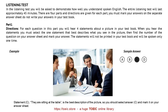Part 1. Directions: For each question in this part, you will hear four statements about a picture in your test book. When you hear the statements, you must select the one statement that best describes what you see in the picture. Then find the number of the question on your answer sheet and mark your answer. The statements will not be printed in your test book and will be spoken only one time. Look at the example item below.